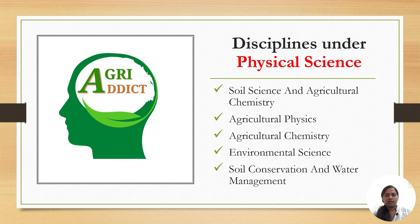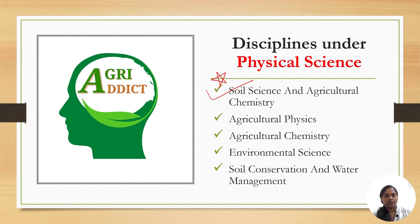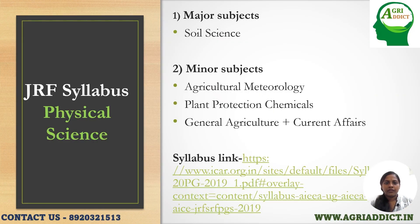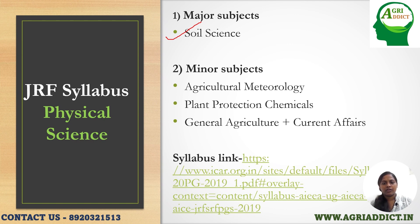When preparing for the ICAR JRF physical science examination, we should focus on five major disciplines. The first one is soil science and agricultural chemistry, which covers the major portion of the physical sciences paper. This is followed by agricultural physics, then agricultural chemicals, environmental science, and soil conservation and water management. These are the major and minor disciplines covered under the subject group of physical sciences. The major subject is soil science, covering the major portion of the whole paper. Minor subjects include agricultural meteorology from agronomy, plant protection chemicals or agriculture chemicals, general agriculture, and current affairs, which are common for all subject groups. A link to download the ICAR JRF physical science examination syllabus has been provided.